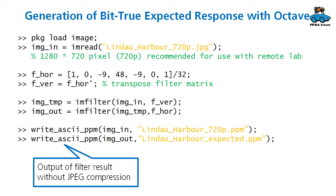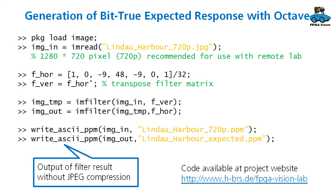There is one modification. The Octave simulation needs to be bit true and therefore we cannot use JPEG compression for the output. We use a sub-program that writes the image without compression in the PPM format. Again, code is available at our project website.